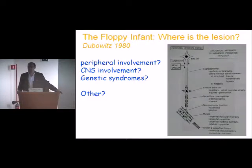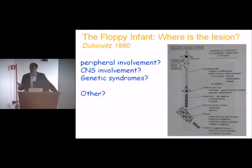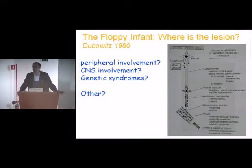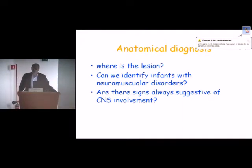The problem is that hypotonia in the neonatal period can be due to different lesions. This is a historical slide by Viktor Dubowitz, who in 1971 — with a second edition in 1980 — made a map of where the lesion can be. So one of the first problems we have to address is deciding where the lesion is. Very often it's peripheral — muscle, nerve, or the junction between them. But the lesion can be higher up, a central nervous system involvement, or sometimes the MRI and peripheral system can be completely normal, and we find hypotonia in genetic or metabolic syndromes.